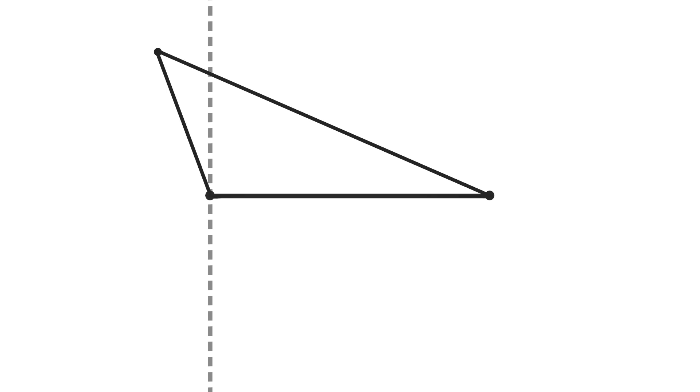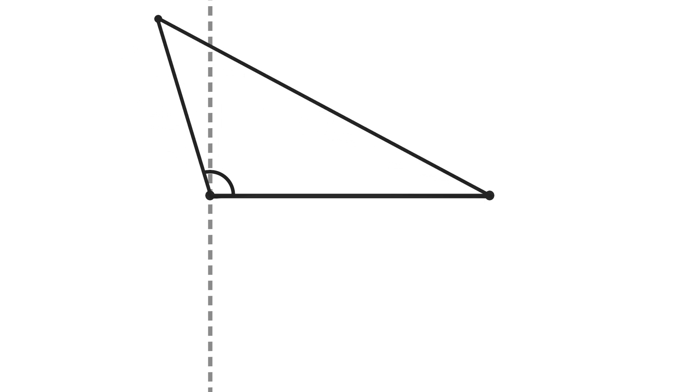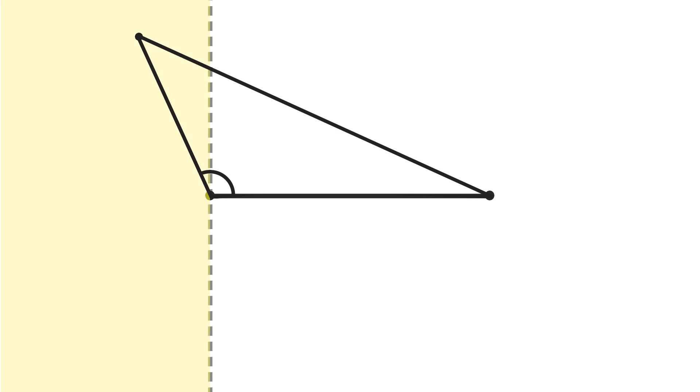I encourage you to pause the video for a moment and think about that. There are really three different places where that point can show up in relation to this perpendicular line. The first place would be if the point is to the left of our perpendicular line. If we draw an example of that, it might look like that — and that gives us an obtuse triangle, meaning a triangle with an angle more than 90 degrees. A neat thing to realize is that in this left area, it doesn't actually matter where the point is exactly, because all of these triangles are still obtuse. As long as that point is to the left of this line, the triangle we form will be obtuse.